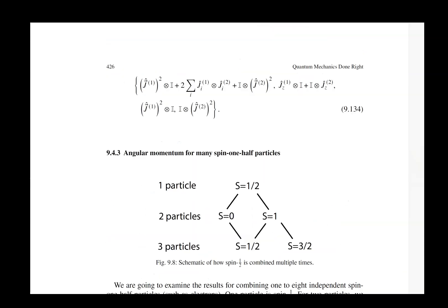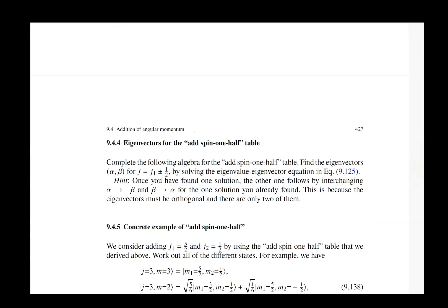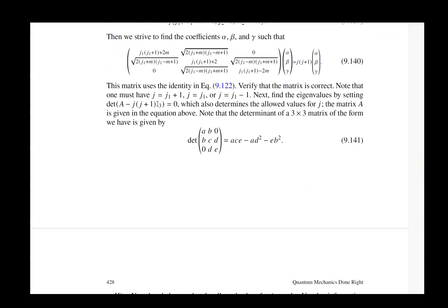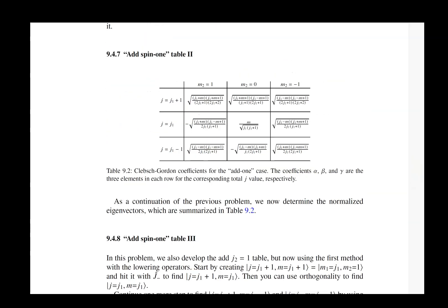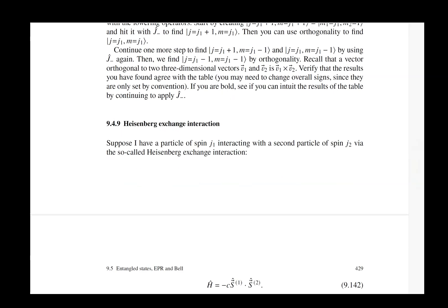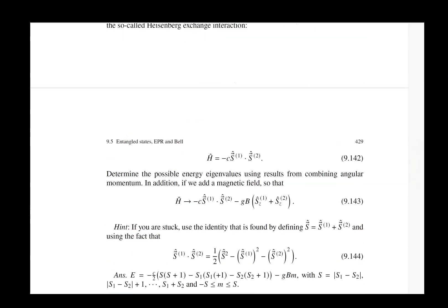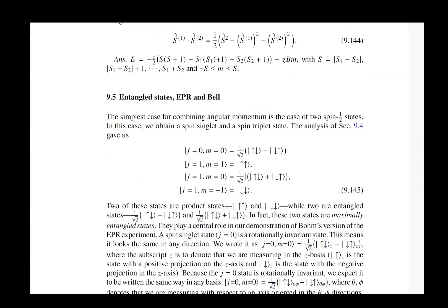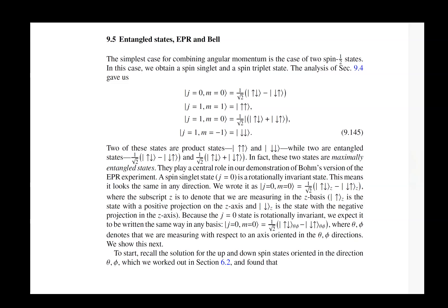We have a number of problems to describe how this works because it's important for you to understand how angular momentum is combined when we get into the next chapter. Then our next section is on entangled states the Einstein-Podolsky-Rosen paradox and the Bell experiments.